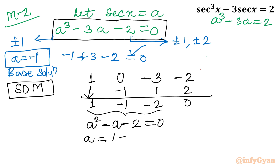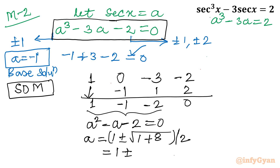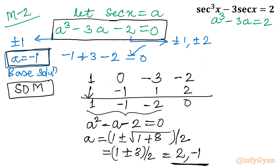Applying the quadratic formula to a² − a − 2 = 0: a = (1 ± √(1 + 8)) / 2 = (1 ± √9) / 2 = (1 ± 3) / 2. Taking the plus sign: 4/2 = 2. Taking the minus sign: −2/2 = −1. So the solutions are a = 2 and a = −1.